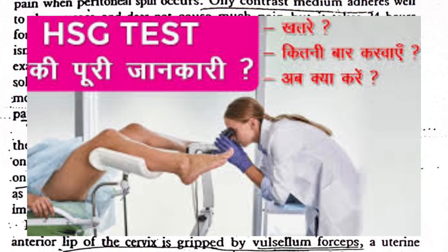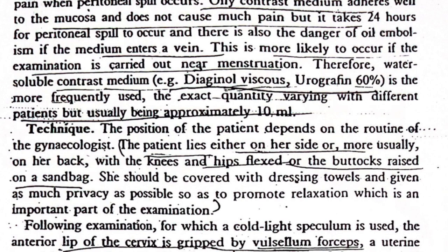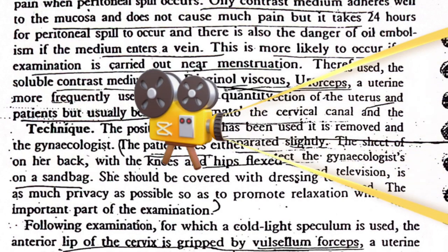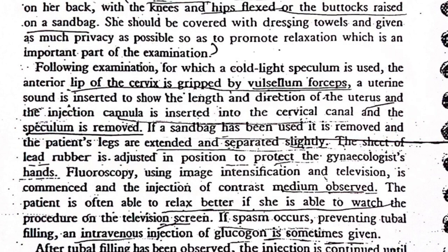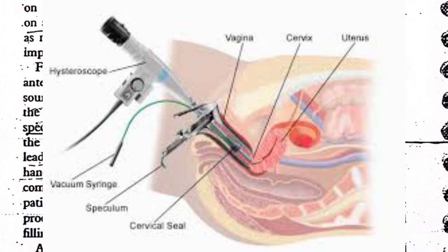Technique: the position of the patient depends on the routine of the gynaecologist. The patient lies either on her side or, more usually, on her back with the knees and hips flexed and the buttocks resting on a sandbag. She should be covered with a dressing towel and given as much privacy as possible to promote relaxation, which is an important part of the examination. Following examination, for which a cold light speculum is used, the anterior lip of the cervix is grasped with vulsellum forceps.